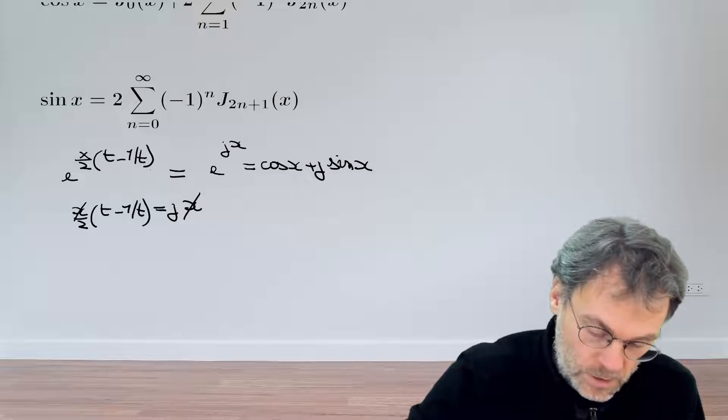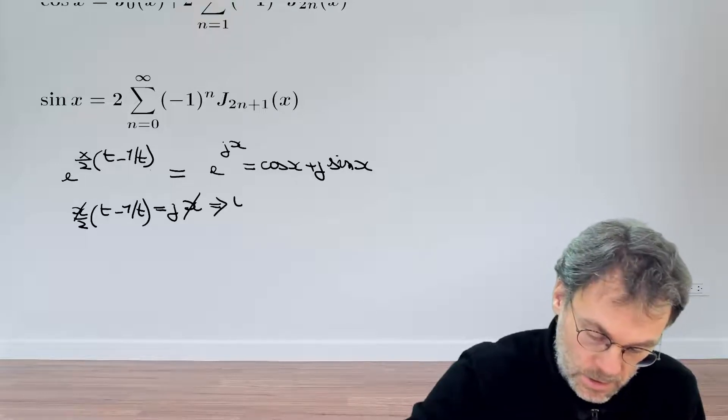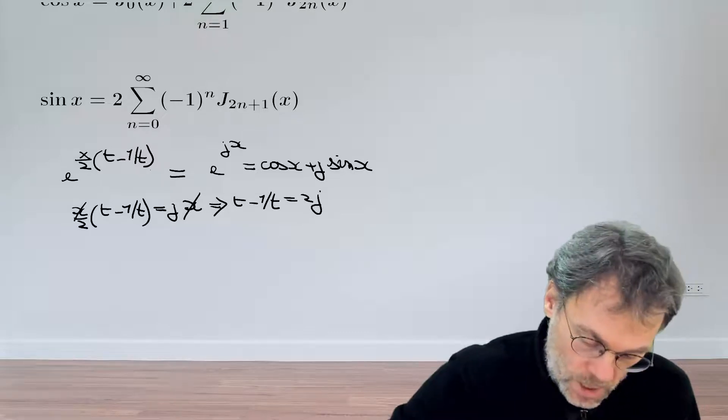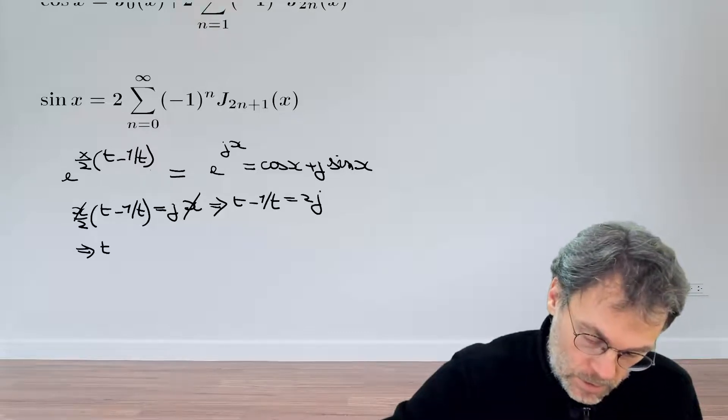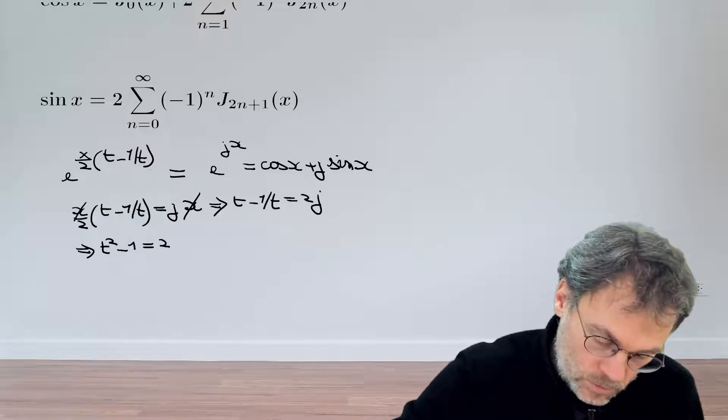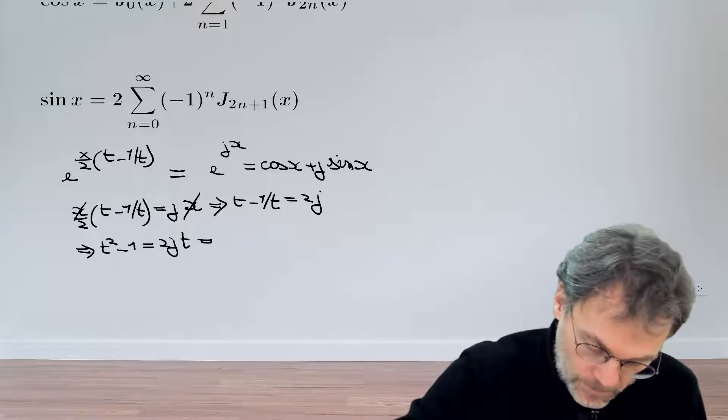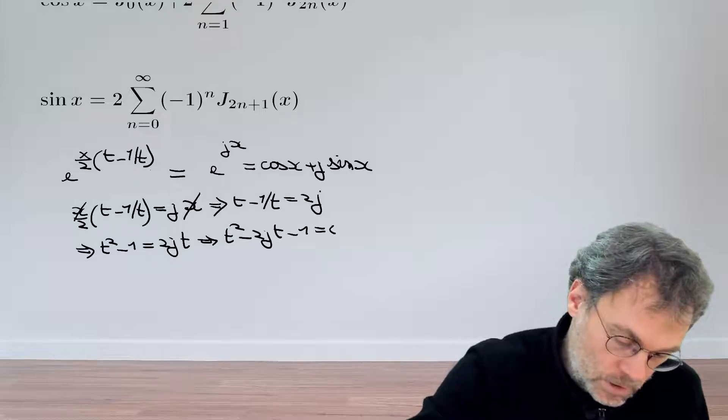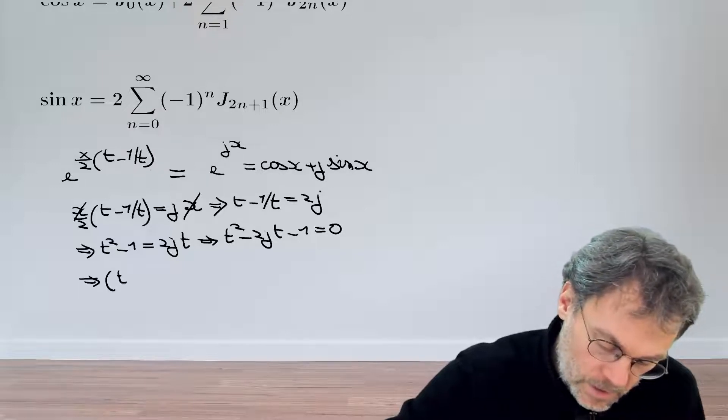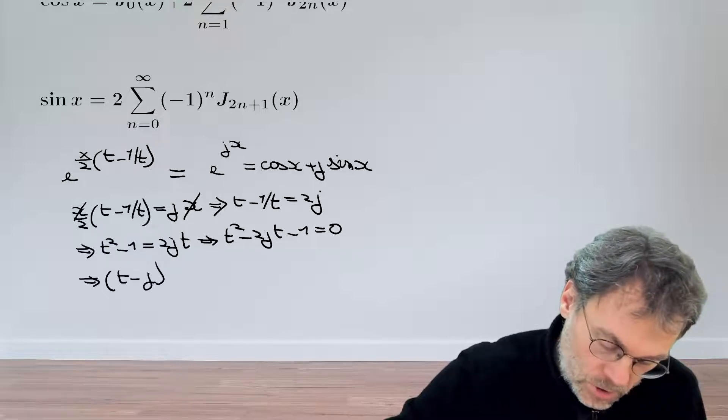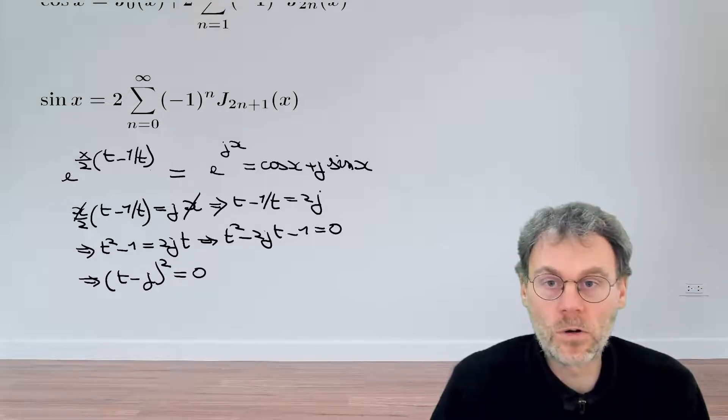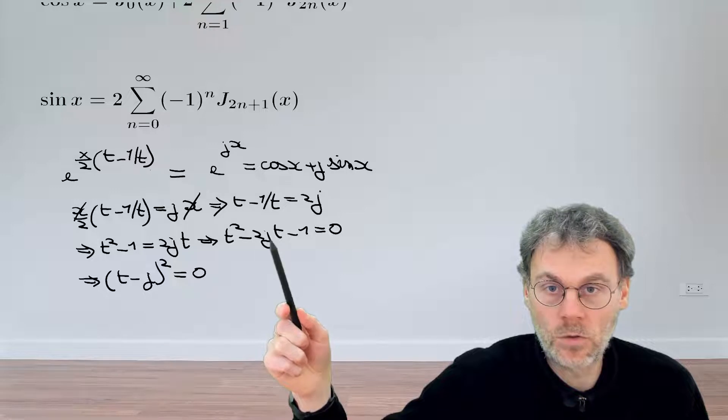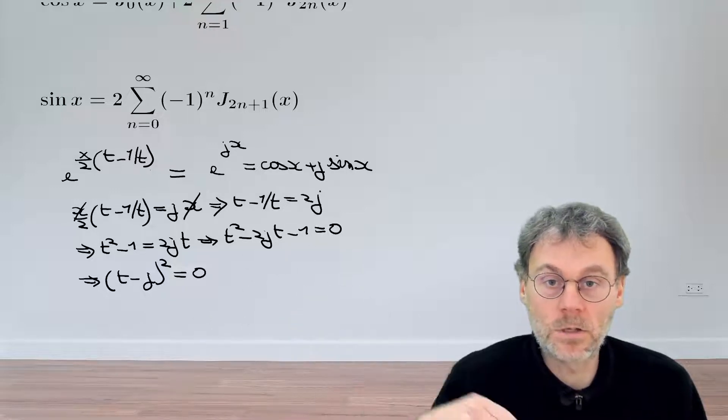They become equal if x over 2 times (t minus 1 over t) is equal to jx. After getting rid of the x, we can write this as t minus 1 over t equals 2j. That becomes t squared minus 1 equals 2j t. So t squared minus 2j t minus 1 equals 0. That finally gives us (t minus j) squared equals 0.